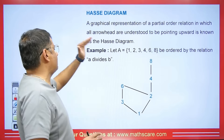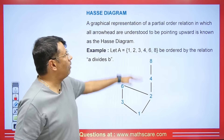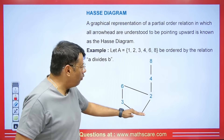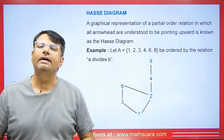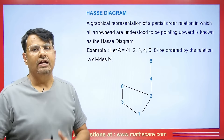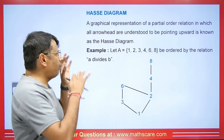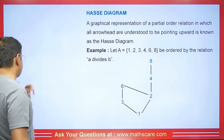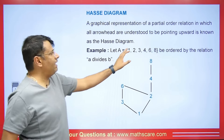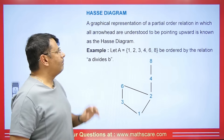What is a Hasse diagram? A Hasse diagram is a graphical representation of a partial order relation in which all the arrowheads are understood to be pointing upwards. It simply means all the relations here are partial order relations, and they will keep relation with the upper points — the arrow diagrams will be made in the upward direction.